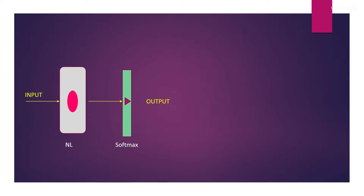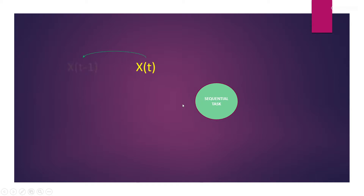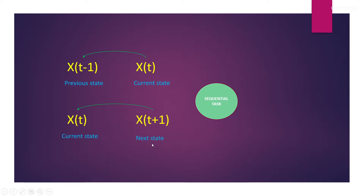What happens in case of a sequential task? A sequential task is a task where the current state is dependent on the previous state, or the next state is dependent on the current state. That means the current element's required output will be dependent on the previous element. Some examples of sequential tasks are DNA sequence classification, stock market prediction, sentiment analysis, music generation, and language translation.